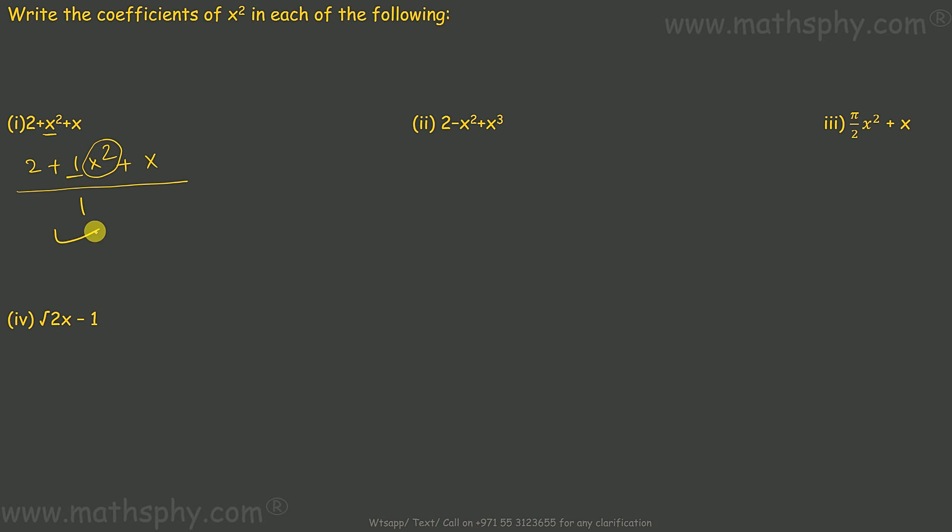Same, I need coefficient of x square which is here. So 2 minus 1x² plus x³. x² is here, coefficient is 1 which is negative. So coefficient of x² in this expression would be negative 1.